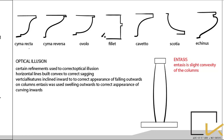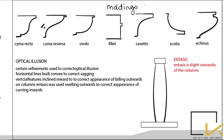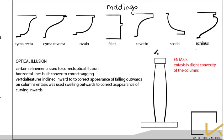The moldings used in Greek temples include: cyma recta (with an S-curve), cyma reversa (with an inverted S-curve), scotia, and echinus. The seven moldings primarily used were cyma recta, cyma reversa, ovolo, fillet, cavetto, scotia, and echinus.